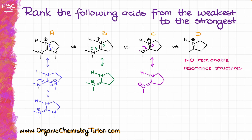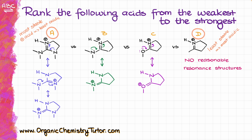We can see right away that there is a drastic difference in stability. Molecule A has the largest number of resonance contributors with full octets, so it is the most stable species and therefore the least acidic. Molecule D has no resonance stabilization whatsoever, making it the least stable and therefore the most acidic species. So in our ranking, molecule A is the weakest acid and molecule D is the strongest.